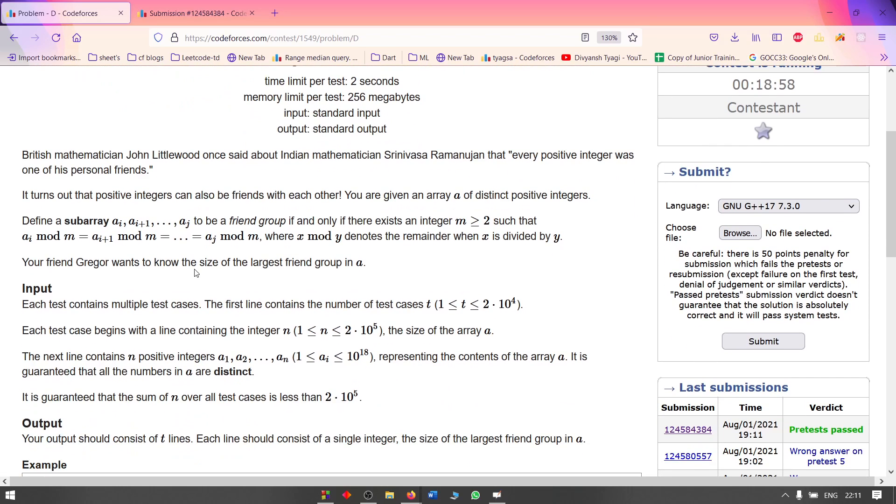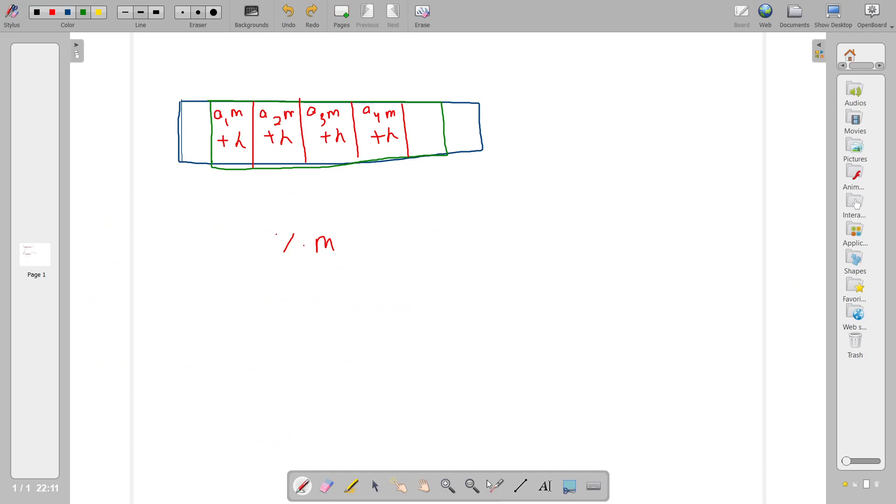The problem statement says you are given an array and you want to find a sub-array that should follow a certain property. The property is that there should exist some integer m such that for that particular sub-array if you mod all the elements by m the value is the same. The idea is that suppose some answer exists for the given array.